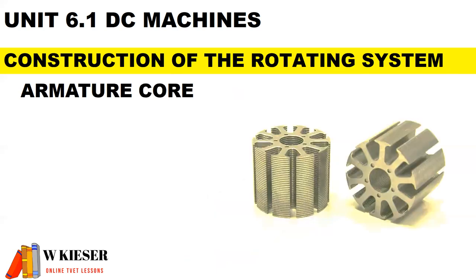The armature core is made of thin slices of laminated sheets, and this is to prevent the effects of eddy current. The main function of the armature core is to produce torque.